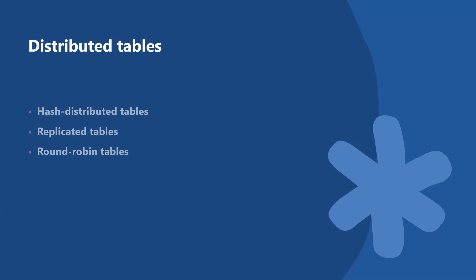What are replicated tables? A replicated table has a full copy of the table available on every compute node. Queries run fast on replicated tables since joins on replicated tables don't require data movement. Replication requires extra storage though and isn't practical for large tables. Replicated tables are best for tables under 200 GB.